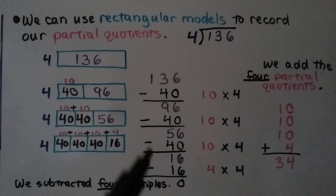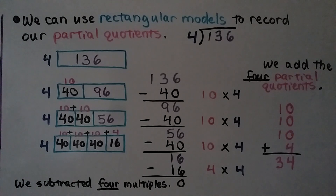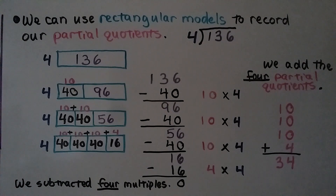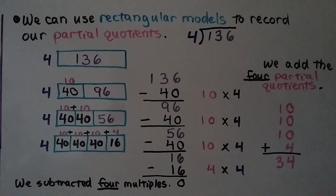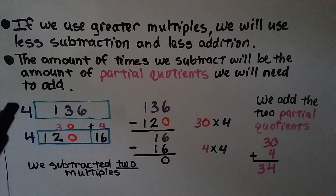So we subtracted 4 multiples, which gave us 4 partial quotients equaling 34. The amount of times we subtract will equal the amount of partial quotients we need to add. So if we can use greater multiples, we won't have to subtract and add as much.